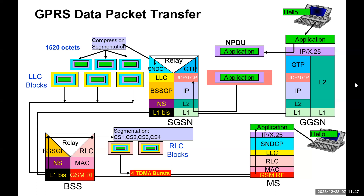After RLC segmentation and header insertion, these RLC blocks are transmitted over the air interface. There is one more layer before the physical radio interface: the MAC — Medium Access Control layer. This layer basically controls the access signaling, such as assignment of uplink and downlink blocks. It adds its own header which all mobiles monitor to look for their turn. Essentially it sends scheduling information, which will be discussed further in a later session. Thank you all for this session on GPRS data packet transfer; the session will be continued in the next module.